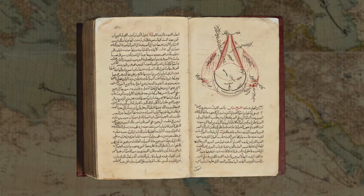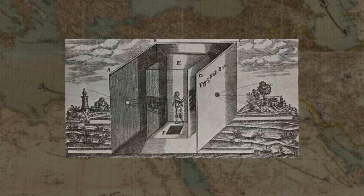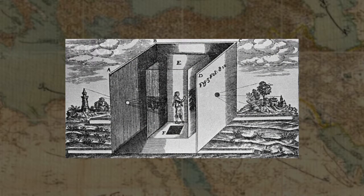One of his most famous experiments is known as the Camera Obscura, in which he created a pinhole camera in a dark room, creating an inverted image on the opposite wall, thereby showing that light travels in straight lines. Ibn al-Haytham used this observation to conclude that the image in the eye is also inverted.